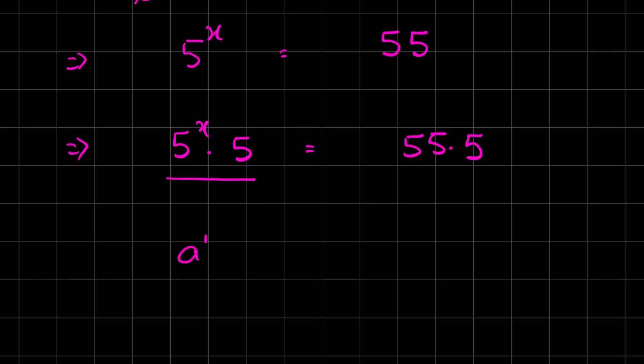Now this is in the form of a raised to the power m times a raised to the power n. And this identity we can write as a raised to the power m plus n. So this we can write as 5 raised to the power x plus 1 is equal to 55 times 5 is 275.